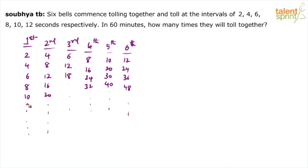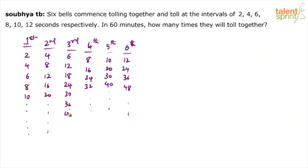These are the times at which the bells ring independently. There will obviously be some common time for all 6 bells when they ring together. For example, the 1st and 2nd bells both ring at the 4th second. To find the common time for all 6 bells together, just take the LCM.